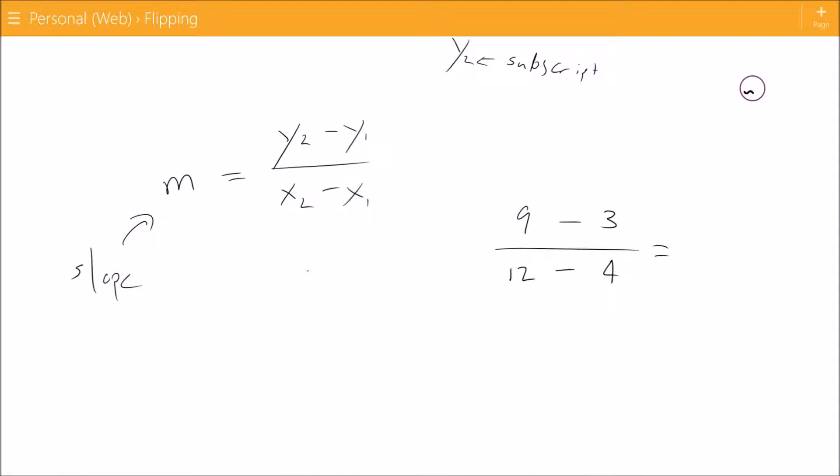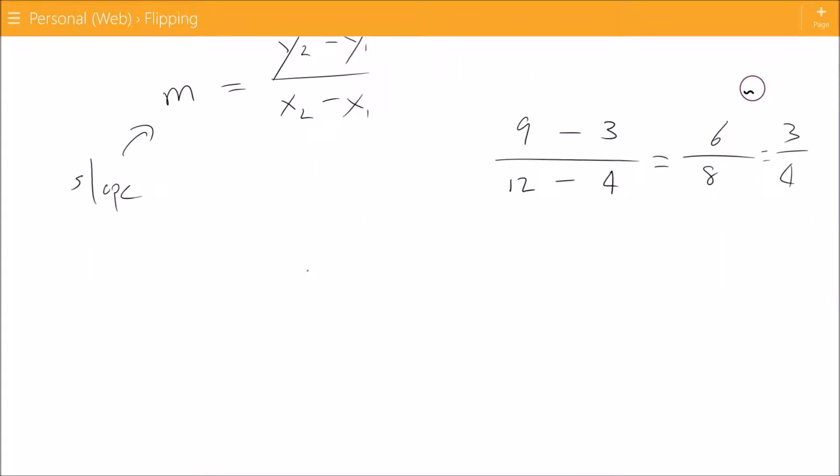Simplify. 9 minus 3 gives us 6, 12 minus 4 gives us 8, and then we can also simplify that. This in and of itself is correct, 6 over 8, but we can simplify that because they're equal.